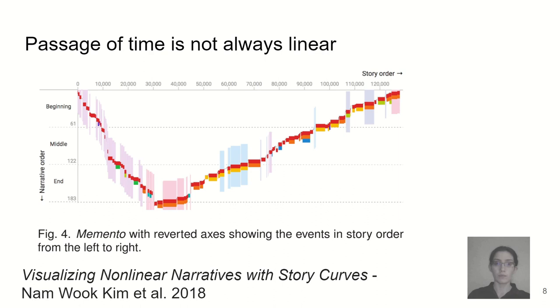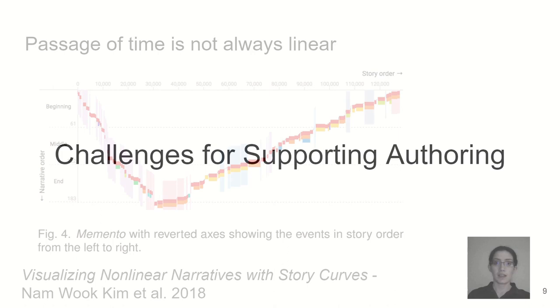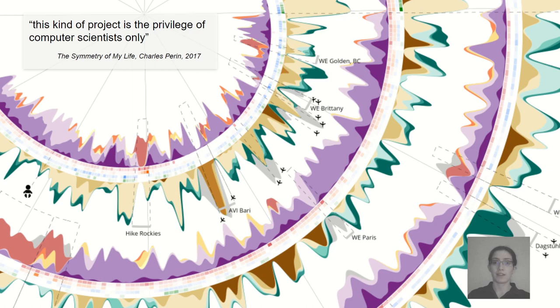When dealing with storytelling and time, we also have to deal with the fact that narratives don't always have a linear passage of time. In movies, they add ellipses to skip over boring bits and time dilation to emphasize significant moments. In this work, we aim to support authoring of idiosyncratic timelines. Most examples we find of timelines do not encode data, which could be due to the lack of support for them in traditional tools and therefore the technical skills needed to produce such visualizations.